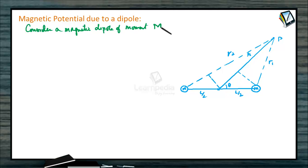Consider a magnetic dipole of moment capital M. Pole strength is small m. The distance between them we have taken as L. Capital M equals m into L, where L is the distance between the poles.